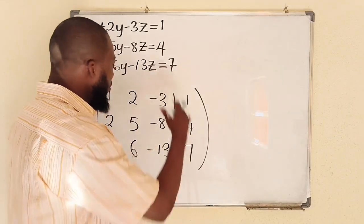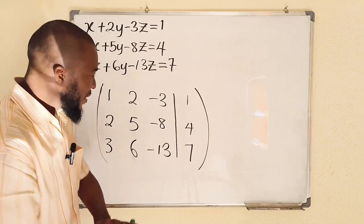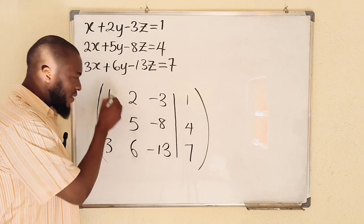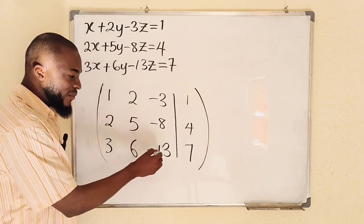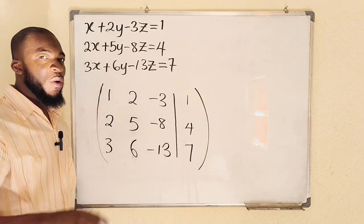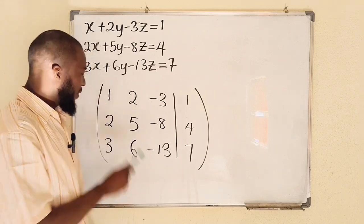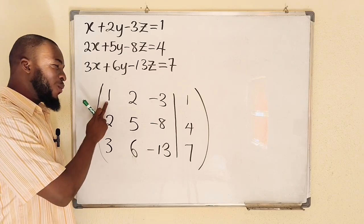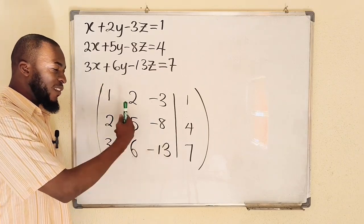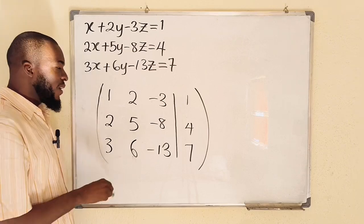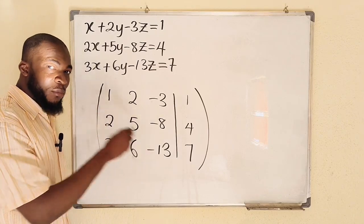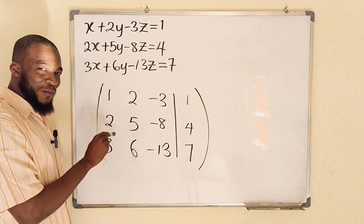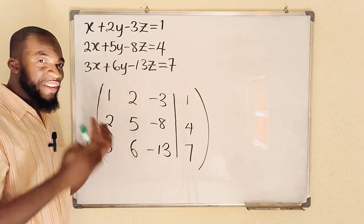We have successfully formed our matrix. The next step is to transform the leading diagonal — that is 1, 5, negative 13 — so that each entry equals 1. This first entry is already 1, so no problem there. We will also ensure all entries below the leading diagonal — that is 2, 3, and 6 — are transformed to zero. This is achieved through row reduction.